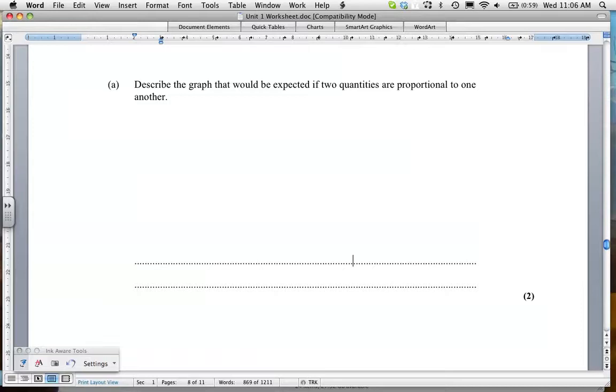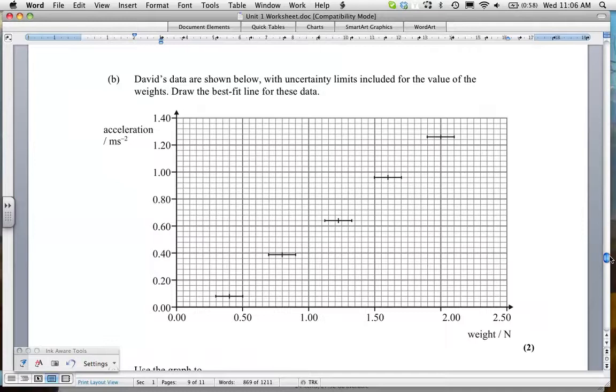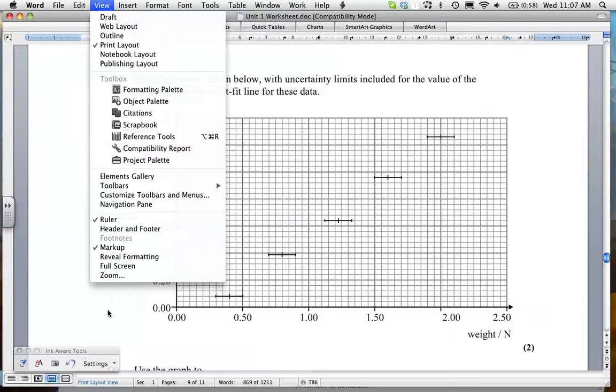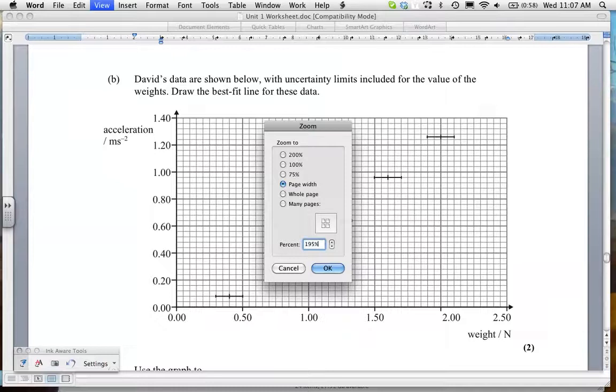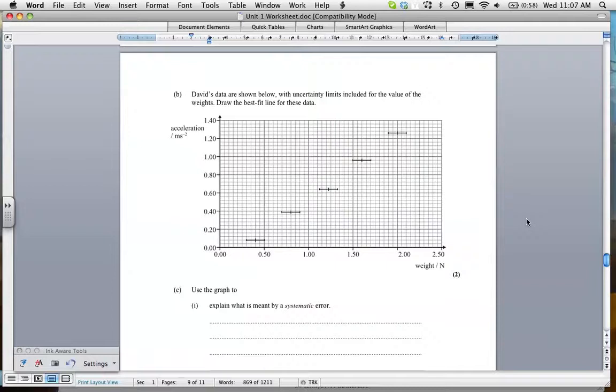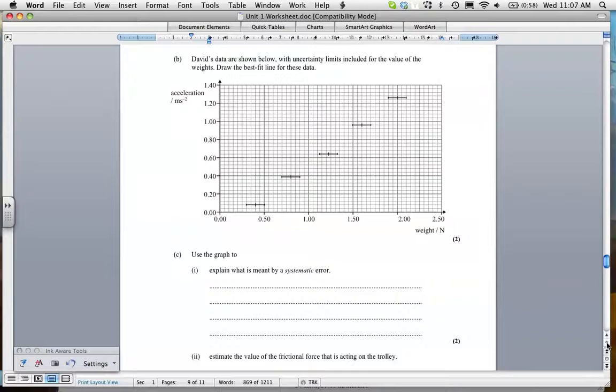Now, we have our graph here. It says, David's data are shown below, with uncertainty limits included for the values of the weights. Draw the best fit line for these graphs. I am going to reduce my size here, so that I can bring it more into one page. All right, so here we have it. David's data are shown with the uncertainty limits. Use the graph to explain what is meant by systematic error. Now, firstly, they asked us to draw a best fit line graph.